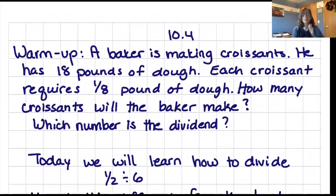A baker is making croissants and he has 18 pounds of dough. Each croissant requires an eighth of a pound of dough. So how many croissants is the baker going to get with his 18 pounds of dough? Tell me how many croissants he's going to get and what number is the dividend. Pause the video now and answer that question.